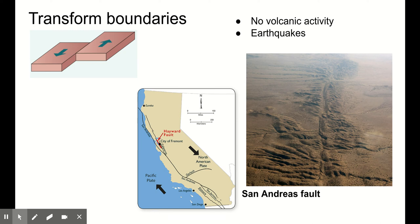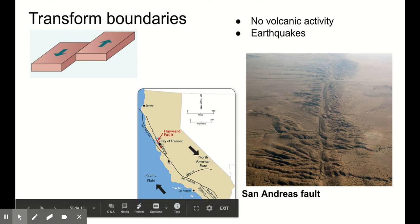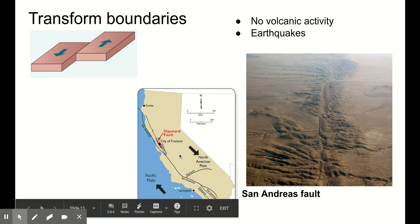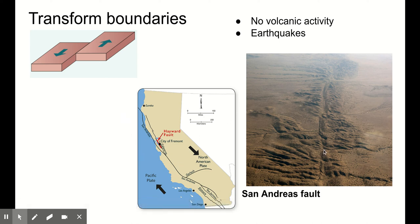By far the most famous example and one of the largest transform boundaries on earth is the San Andreas fault, stretching all the way from Southern California almost up to Northern California. The San Andreas fault is formed by the North American plate moving towards the southeast while the Pacific plate moves towards the northwest — so these two plates are slipping past each other. And you can see the very long San Andreas fault from outer space, stretching along Southern California.